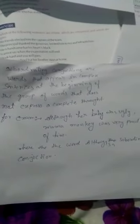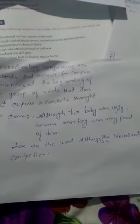Subordinating conjunctions are words that appear in complex sentences at the beginning of the group of words that does not express a complete thought. For example, although her baby was ugly, Mama Monkey was very proud of him. Here, the word although is a subordinating conjunction.